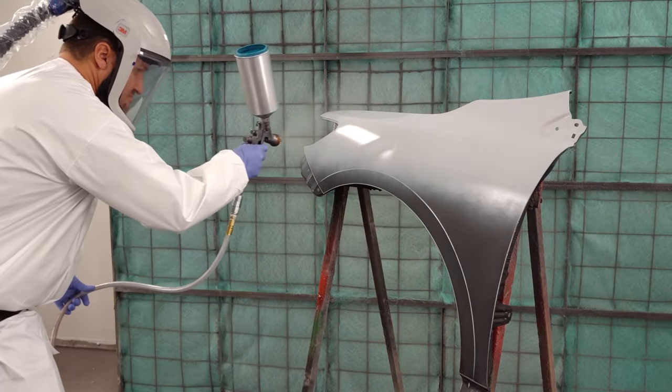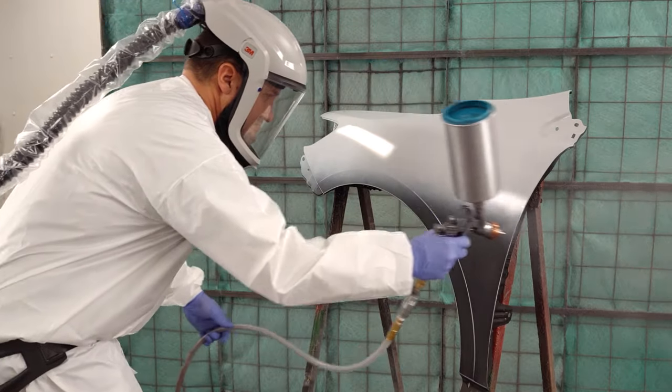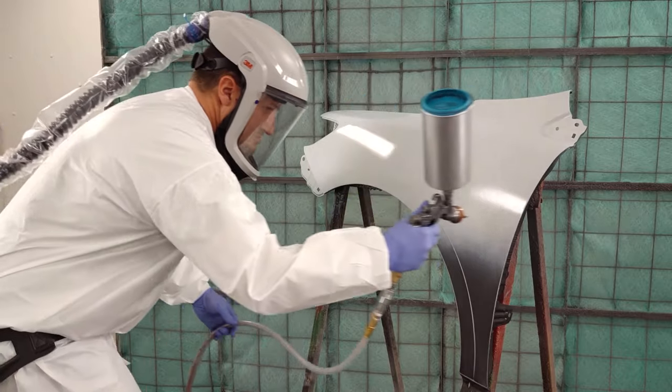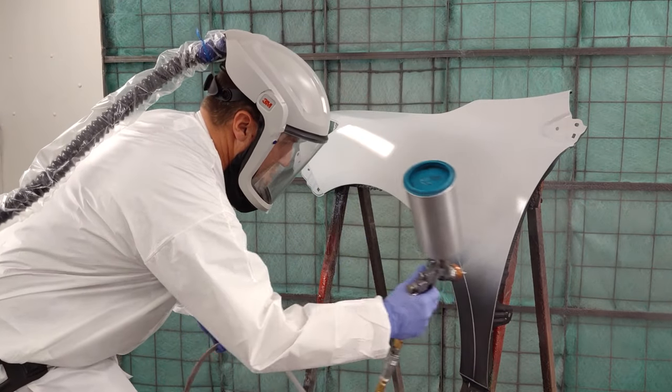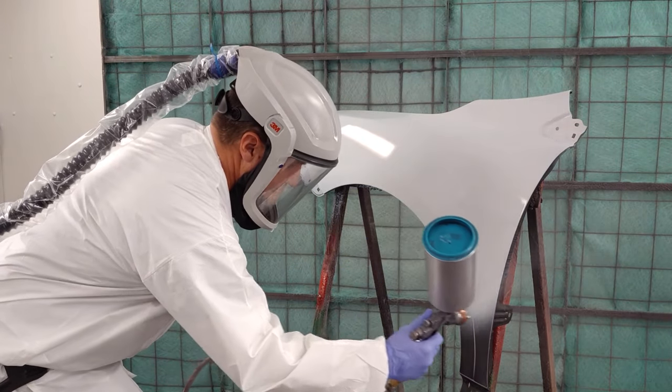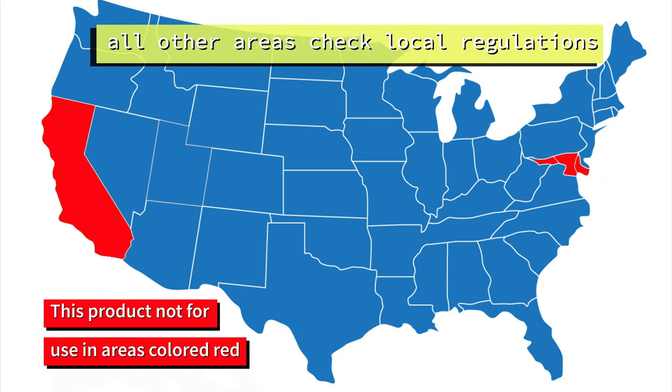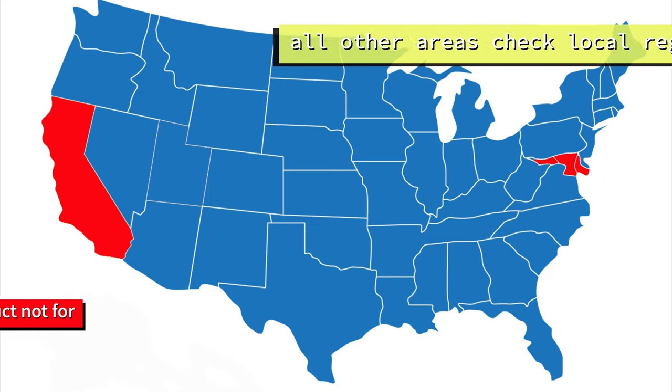OxyStick EP21 is for use only in areas that do not require low VOC product. Most of the United States does not require a low VOC product, but some areas do, such as most of California, Maryland, Delaware, and potentially other areas as regulations evolve. Always check local regulations before purchasing.